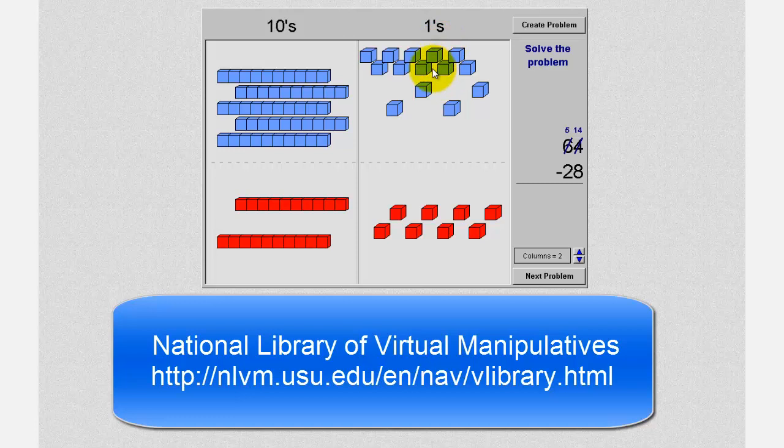Notice on paper, we indicate the exchange by changing the 6 in the 10's place value to a 5, and the 4 in the 1's place value changes to 14.